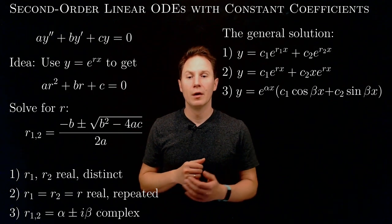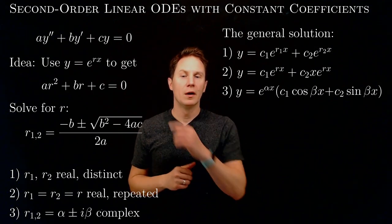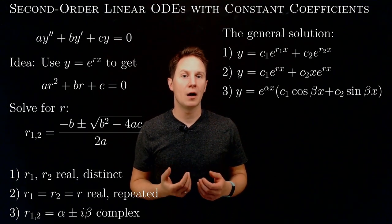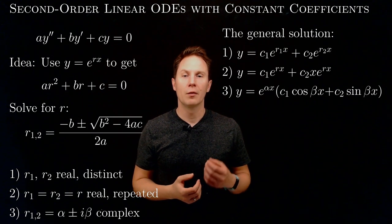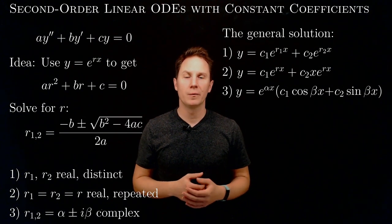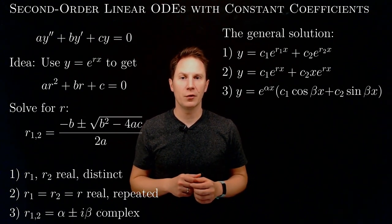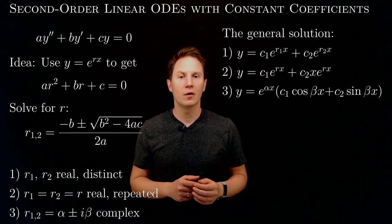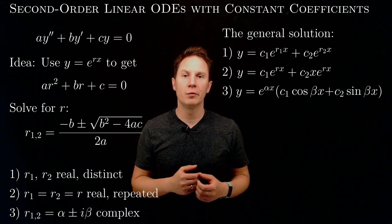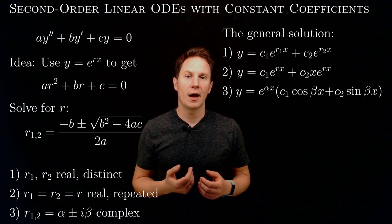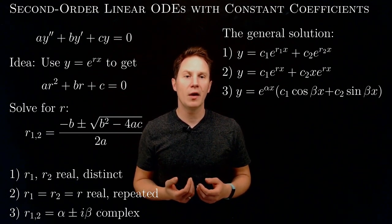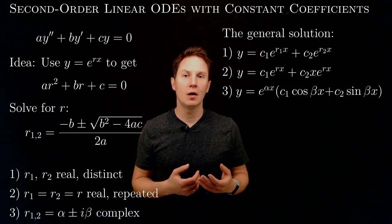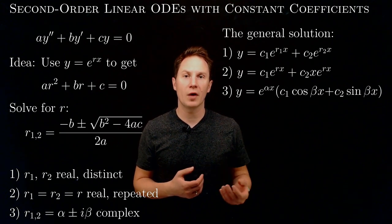If we have real repeated zeros for the quadratic, then the general solution is a linear combination of e to the rx and x times e to the rx, where r denotes the repeated zero. Finally, if we have complex conjugate solutions to the quadratic — also called the auxiliary equation — then the general solution reads e to the alpha times x, times c1 times cosine of beta x plus c2 times sine of beta x.